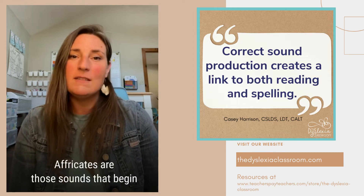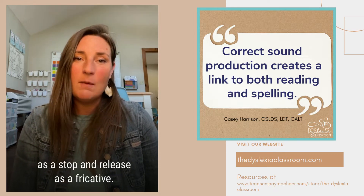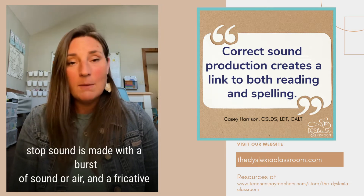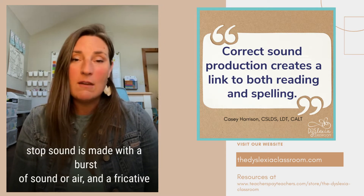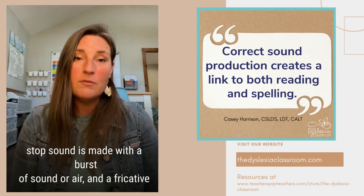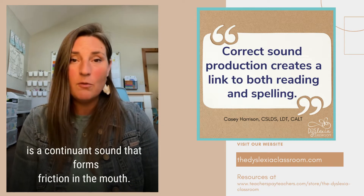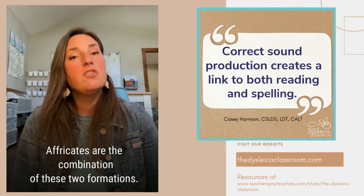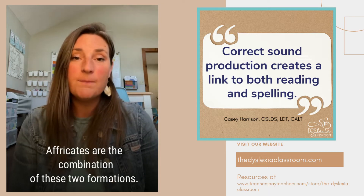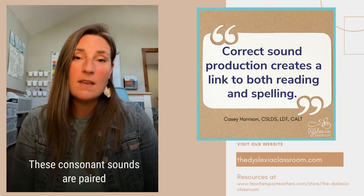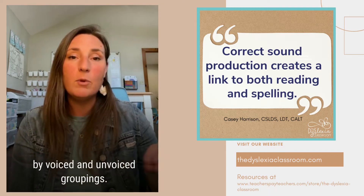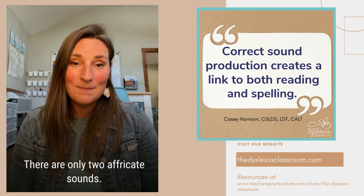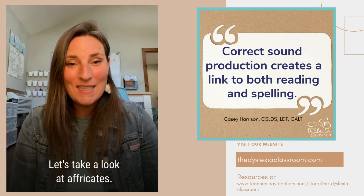Affricates are those sounds that begin as a stop and release as a fricative. A stop sound is made with a burst of sound or air, and a fricative is a continuant sound that forms friction in the mouth. Affricates are the combination of these two formations. So we have these consonant sounds paired by voiced and unvoiced groupings, and there are only two affricates. So let's take a look at them.